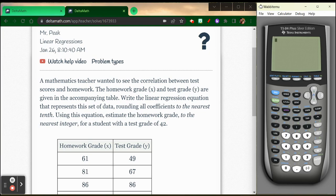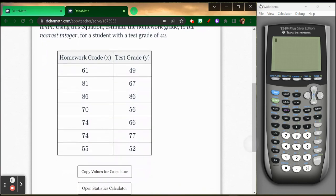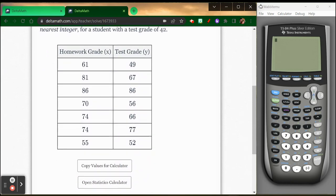And using this equation, estimate the homework grade to the nearest integer. So estimate a homework grade this time for a student with a test grade of 42. Well, we can do this. So this process is the same for the linear regression equation. I'm going to take this information and put it into my calculator.